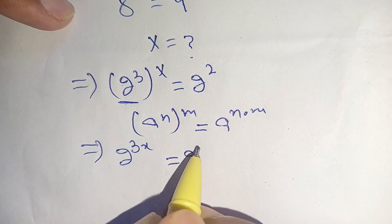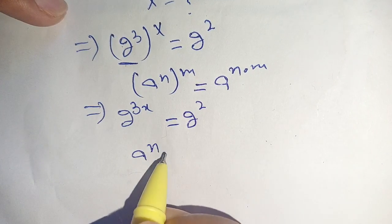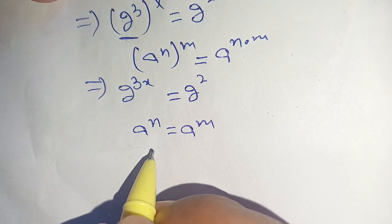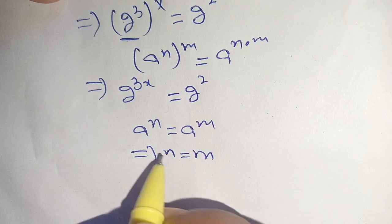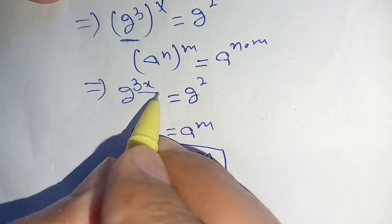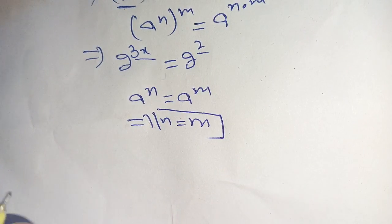Now it is in the form of a raised to power n equals a raised to power m. Now we can compare its powers, meaning that n equals m. Here a equals 2, n equals 3x, and m equals 2. On comparing its powers, we have 3x equals 2.